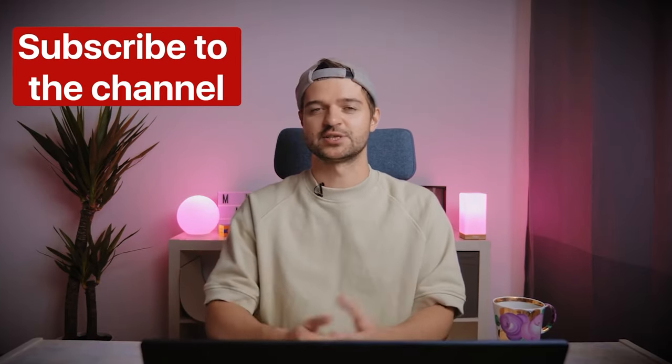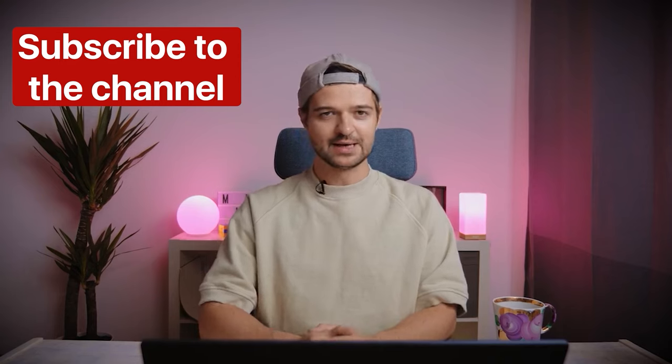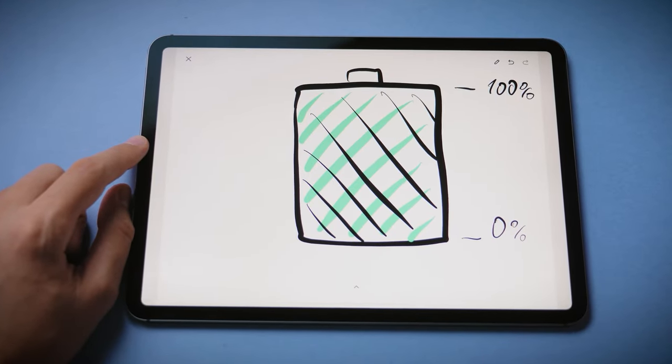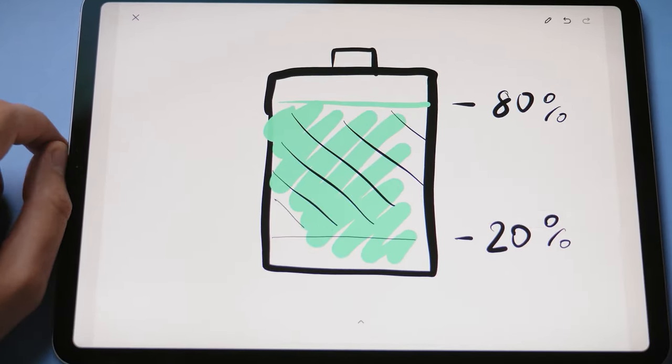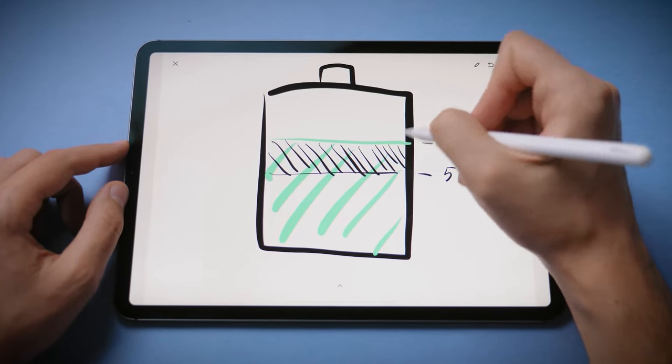We've sorted out the battery theory. Here, you can already click the like, bell, and subscribe. And now, we've come to practice. Now you and I know all the process taking place in the battery, and finally, we're able to figure out exactly how to charge a smartphone. We have three options. The first, from zero to 100%. The second, from 20% to 80%. And the third, a little bit during the day.